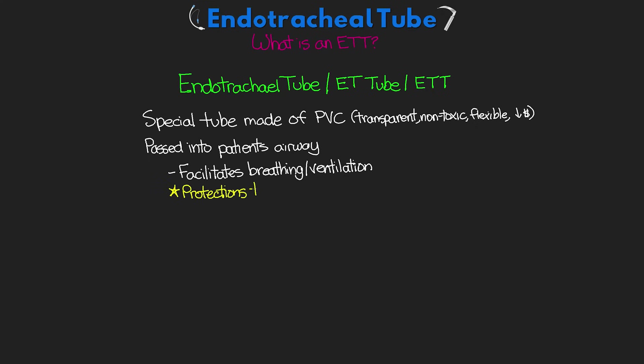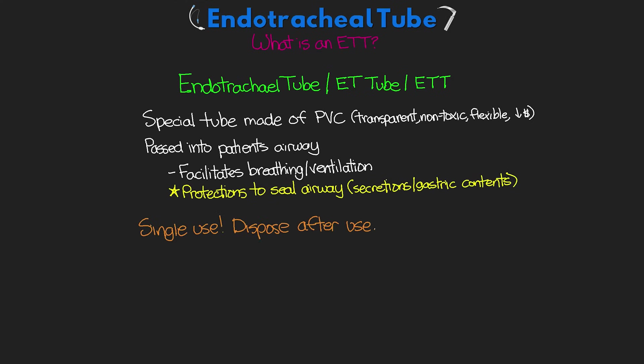The ET tube also has protections in place to seal off the airway from anything entering, such as secretions or gastric contents. These are single-use tubes that are disposed after patient use, although there are additional components used in the placement that are not disposed. There are also basic endotracheal tubes as well as more complex ones with additional functions — for example, one that isolates one lung from the other, which is particularly useful for some pulmonary surgeries.